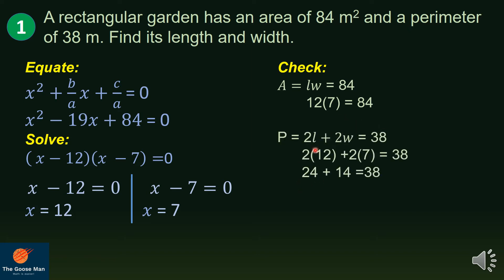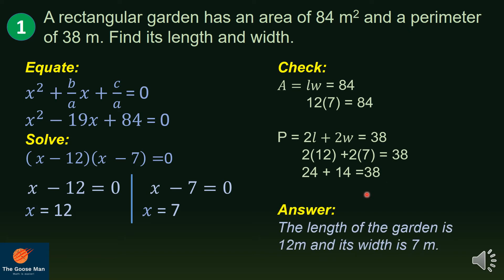Also, the perimeter equals 2 times length plus 2 times width, which should equal 38. So 2 times 12 plus 2 times 7 — is it equal to 38? We get 24 plus 14 equals 38. Therefore, 38 equals 38. Thus, the length of the garden is 12 meters and its width is 7 meters.